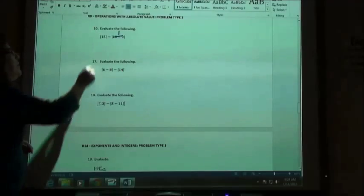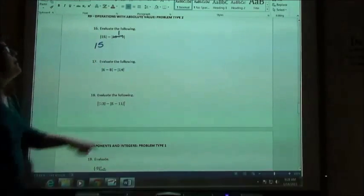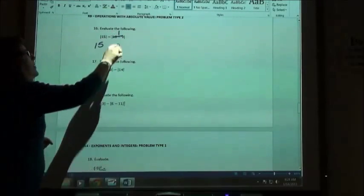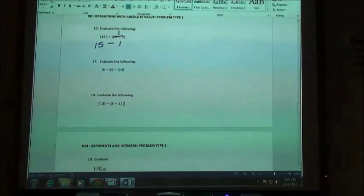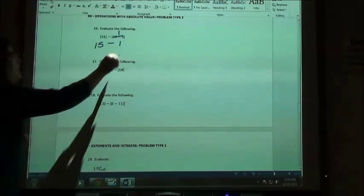Absolute value of 15 is 15. The absolute value of 1 is 1. There's a subtraction between those two expressions. So my problem just says do 15 minus 1, which is 14.